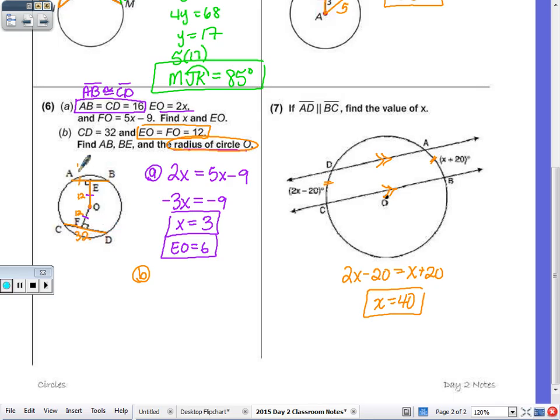So if CD is 32, AB is 32, with each segment, as this would be a midpoint, since O bisects, A to E and B to E are both 16. Find length AB and BE, so those lengths are 32 and 16. AB is 32, BE is 16, and the radius of the circle.